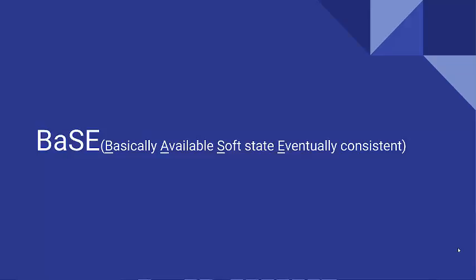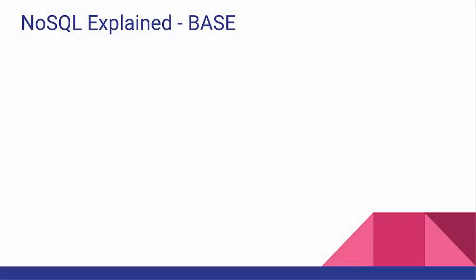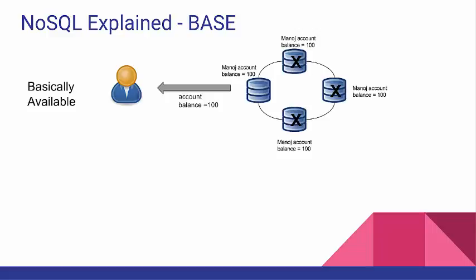BASE stands for Basically Available, Soft State, Eventually Consistent. Let's first look at what Basically Available means through an example. Let's assume we have a four-node database and my account balance information is available on all four nodes due to replication. Now suppose three nodes are down due to disk failure — I can still retrieve or update my account balance from the one node that is still up. So the database as a whole is still up and available. This is what Basically Available means.